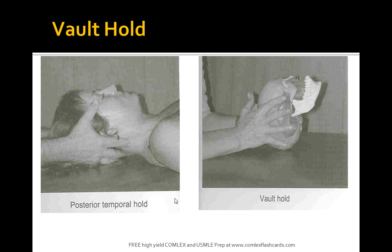To review the vault hold finger placement: index finger over the greater wing of the sphenoid; middle finger on the squamous portion of the temporal bone, just anterior to the ear; ring finger over the mastoid process; and little finger positioned in the squamous portion of the occiput. It's important to understand the vault hold technique and its use — it is used for modulating SBS strains.